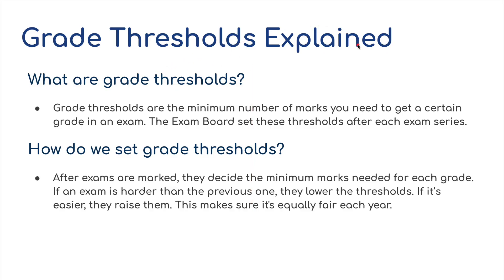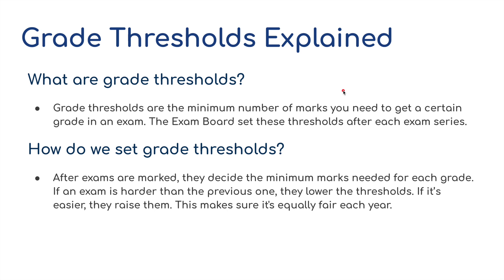Grade thresholds explained. What are grade thresholds? Grade thresholds are the minimum number of marks you need to get a certain grade in an exam. The exam board sets these thresholds after each exam series. For IGCSE and O-Level you generally sit two papers, both worth 75 marks, so out of a total 150 marks.